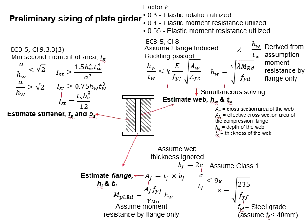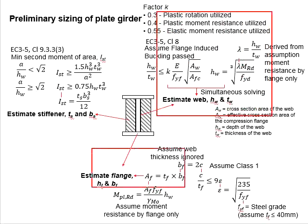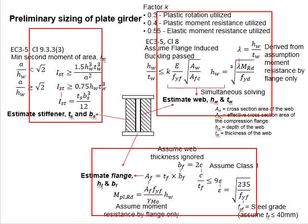This slide summarizes the equations that are used to determine the size of the plate girder. It comprises three main parts: the web, the flange, and the stiffener.